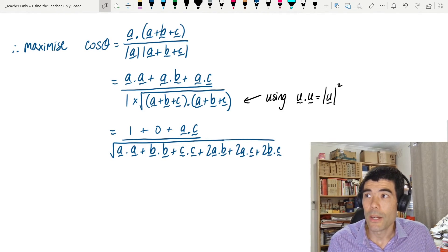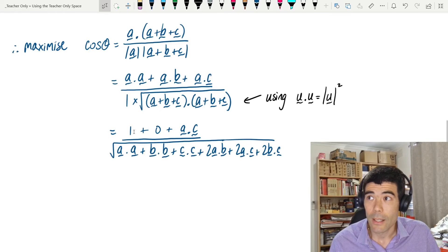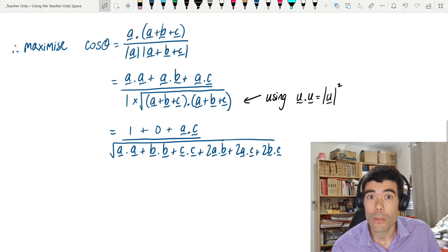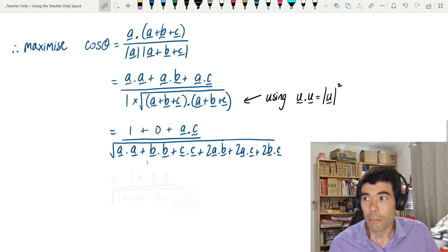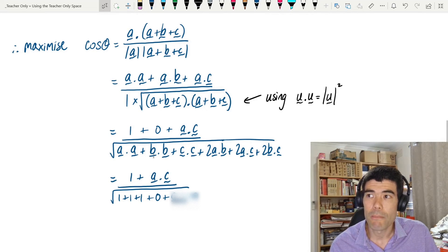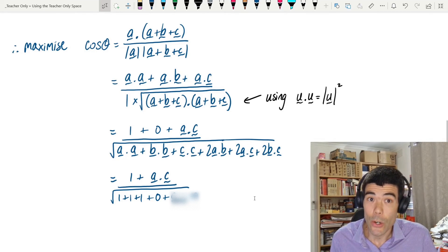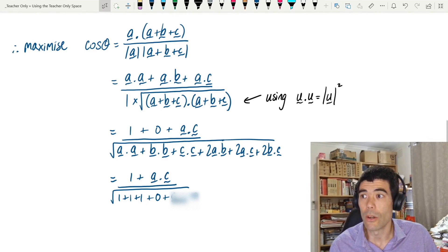On the top, a dot a is 1 because it's a unit vector. a dot b is 0 because we're told they're perpendicular. a dot c we don't know. On the bottom, again, a dot a, b dot b, c dot c are all 1. a dot b and b dot c are 0 because we know they're perpendicular, and a dot c is unknown.